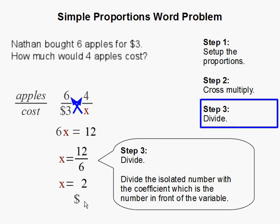Twelve divided by six gets us two. Remember, we are looking for the cost of four apples, so make sure we have our dollar sign. Four apples cost two dollars, and this completes our problem.